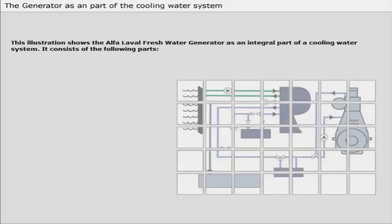This illustration shows the Alpha Laval freshwater generator as an integral part of a cooling water system. It consists of the following parts.